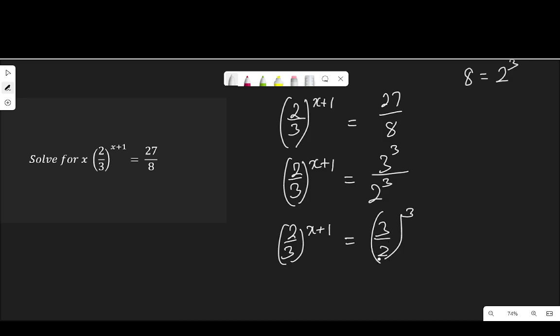But this 3 over 2, I can write it as 2 over 3 to the power of negative 3. Why negative 3? Let me write it here. So what I'm saying in essence, this 3 over 2, I can write that as 2 over 3 to the power of negative 3.